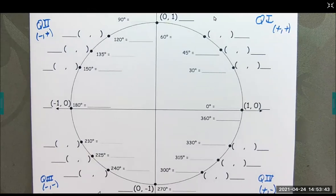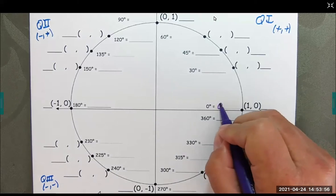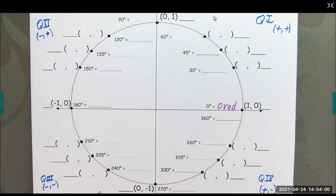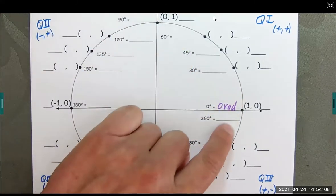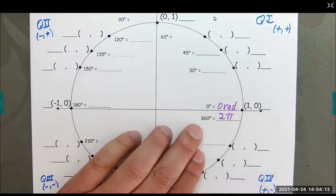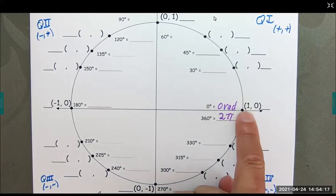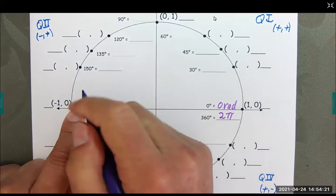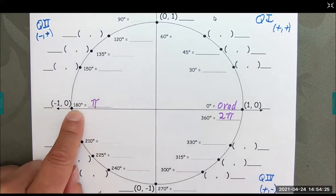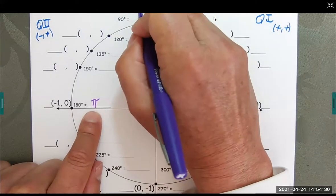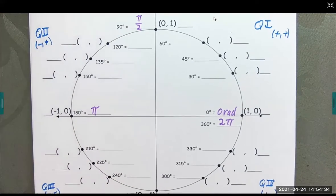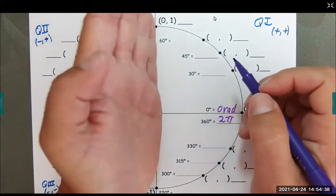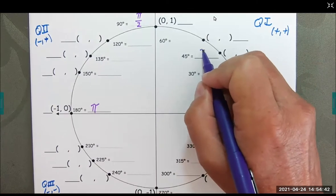We're going to convert angles into radians first, because we should start thinking in radians more so than degrees. Zero degrees is zero radians. All the way around is 360 degrees, which is 2π radians. Half of 2π is π, corresponding to 180 degrees. Half of π is π/2, at 90 degrees. And half of π/2 is π/4, at 45 degrees.